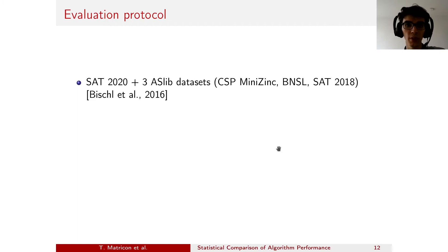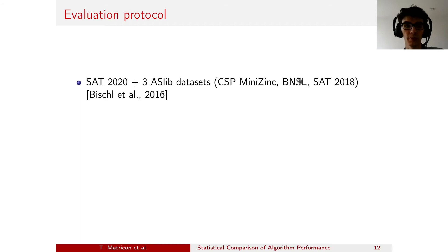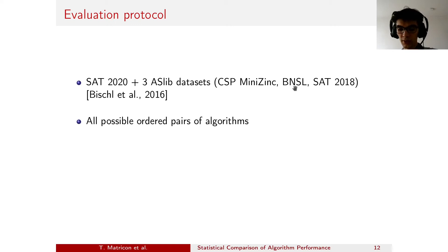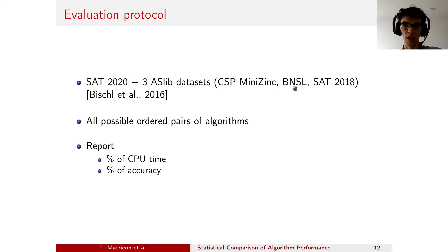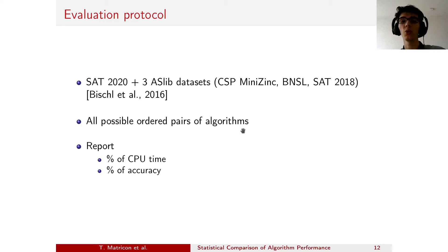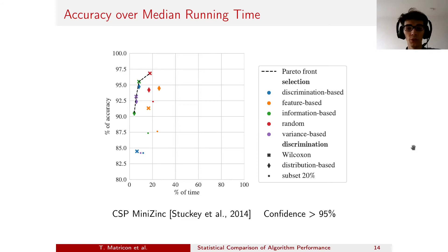Now let's present our evaluation protocol. We considered four datasets, all from competitions: the SAT 2020 dataset from the competition of the same name, and three ASLIB datasets — CSP Minizync, Bayesian Network Structural Learning, and the SAT 2018 competition. We consider all ordered pairs of algorithms in a dataset, so each algorithm takes turns being the challenger and the incumbent. For each dataset, we report the percentage of CPU time used — the ratio of time spent running the challenger on selected instances divided by the time to run it on all instances — and the percentage of accuracy.